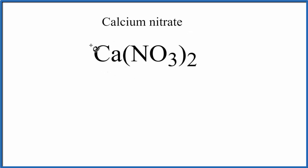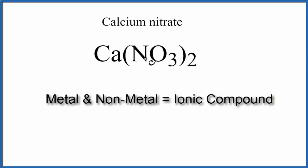Calcium on the periodic table is a metal, and then N and O, those are non-metals. They're actually grouped together in what we call a polyatomic ion, NO3, and we have two of these NO3 ions here. So when we have a metal and non-metals, we have an ionic compound.